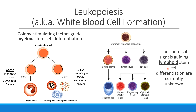We don't necessarily know what specific chemicals lead my lymphoid progenitor cell to make a B cell or to make a T cell — or remember, we also have that one called the natural killer cells. We don't know, like we know with these colony stimulating factors, exactly what leads to this differentiation. So make sure we know what the lymphoid types of cells can develop into to make our white blood cells.